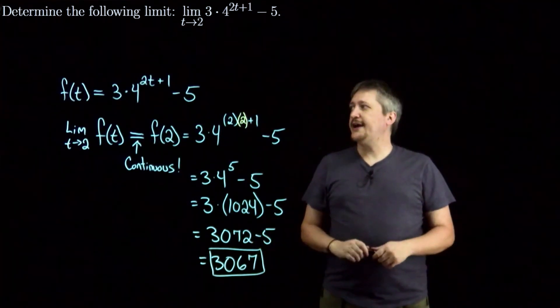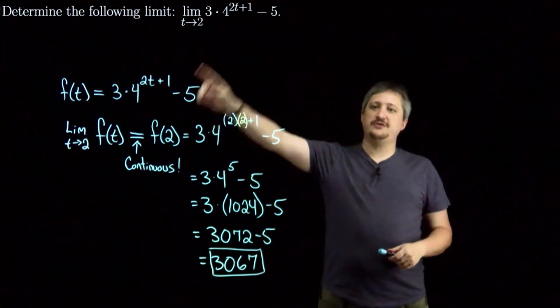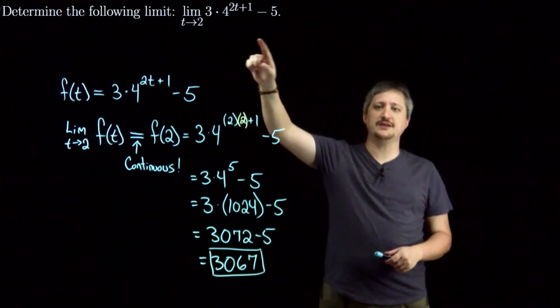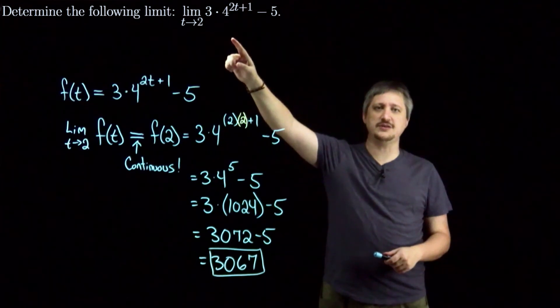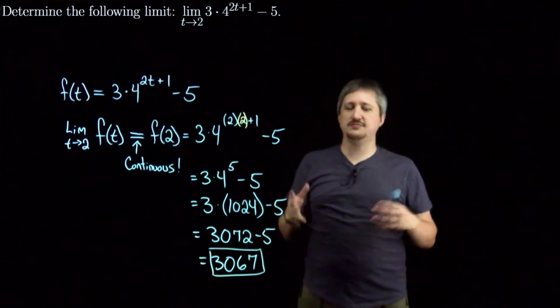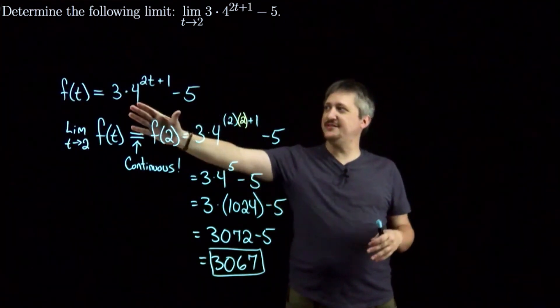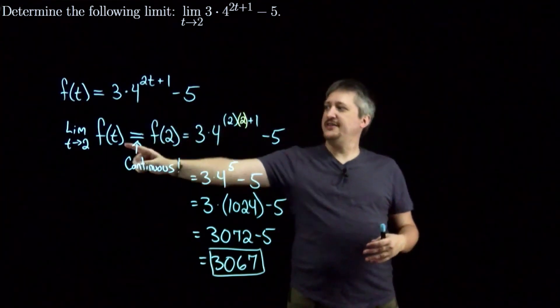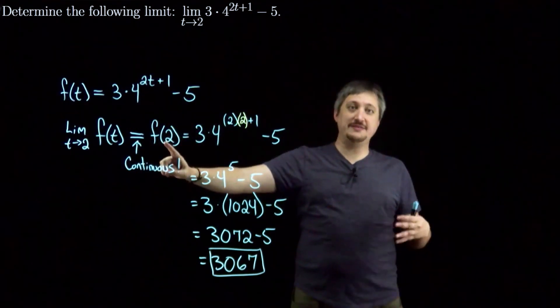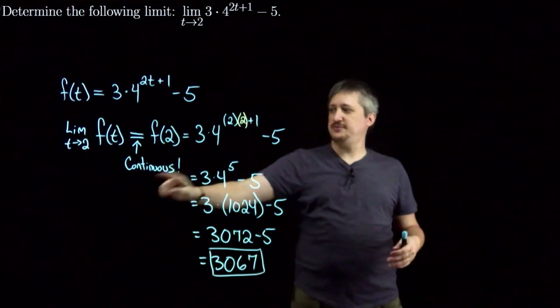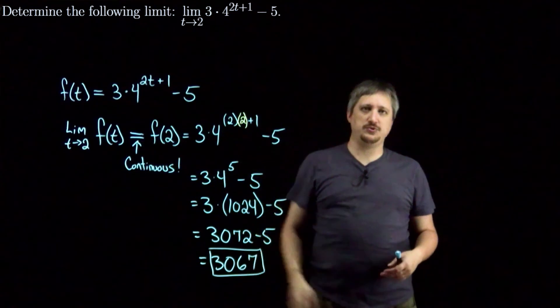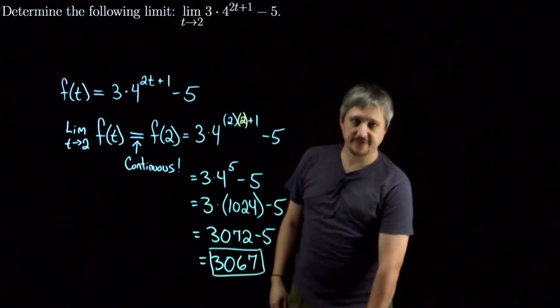So again, just as a quick recap here. We started out with this limit up here, but I noticed that this function or this expression that I'm trying to take a limit of is continuous. So I sort of defined it as this f of t just to be clear what I was doing. But the idea is that because this thing is continuous, that means the limit as t approaches 2 of this thing is equal to exactly the same value as when I plug in 2. But that's only true because of the continuity bit. And then plug in 2, compute. So that is it.